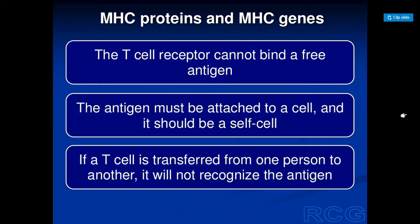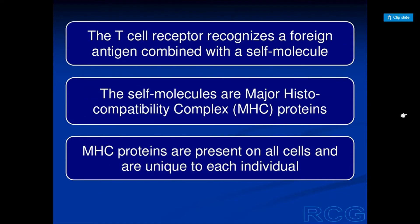Now the MHC proteins and MHC genes. The T-cell receptor cannot bind free antigens. The antigen must be attached to a cell and it should be a self-cell. If a cell is transferred from one person to another, it will not recognize the antigen. The T-cell receptor recognizes a foreign antigen when it combines with the self-molecule. The self-molecules are the major histocompatibility complex MHC proteins, which are present on all cells and are unique to each individual.